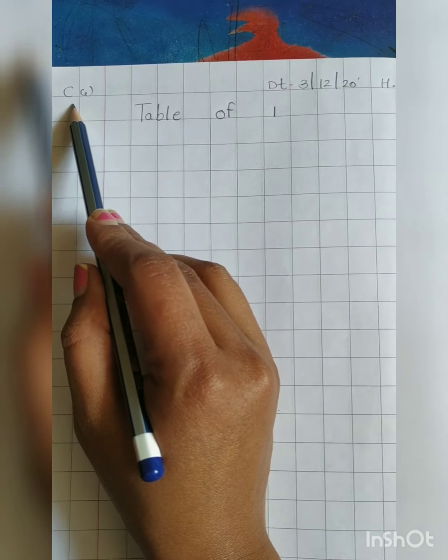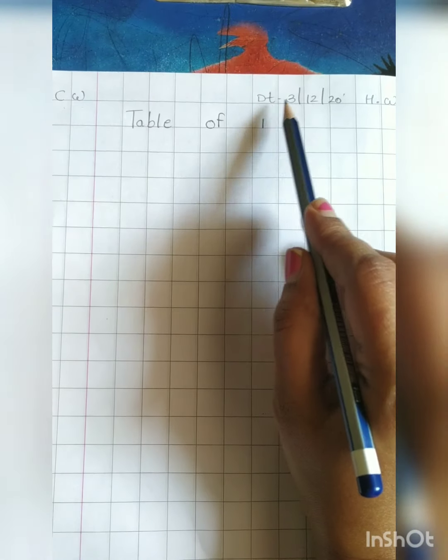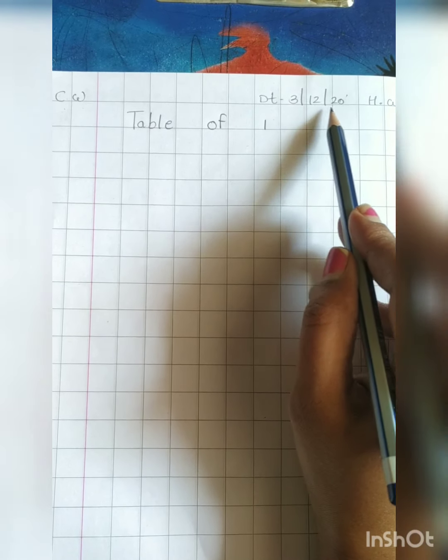Write here CW and here HW. Date 3, 12, 20.